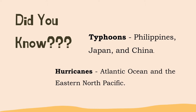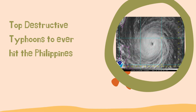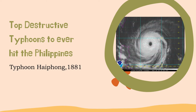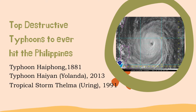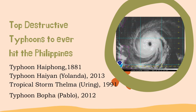The top destructive typhoons to ever hit the Philippines are Typhoon Haifuong in 1881, Typhoon Haiyan, known as Typhoon Yolanda in 2013, Tropical Storm Thelma, known as Uring in 1991, and Typhoon Bofa, or Pablo, in 2012.